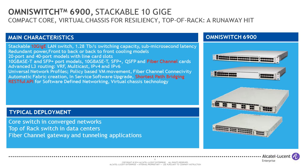The 6900 is also the heart and soul of our data center switching solution — a very performant top-of-rack switch with shortest path bridging support, which is critical in the data center, and Fibre Channel support as well. This has been a great alternative in the core for customers looking to build a solution that is resilient, performant, and cost-effective.